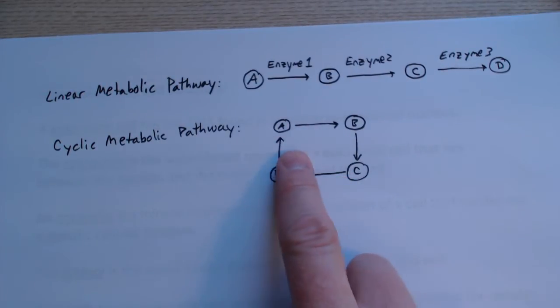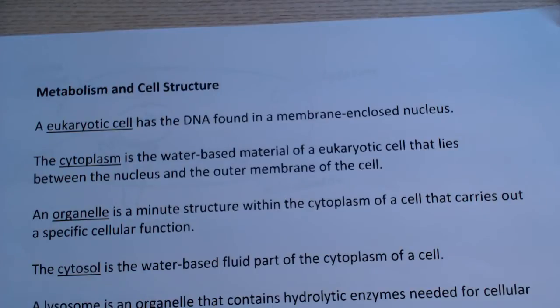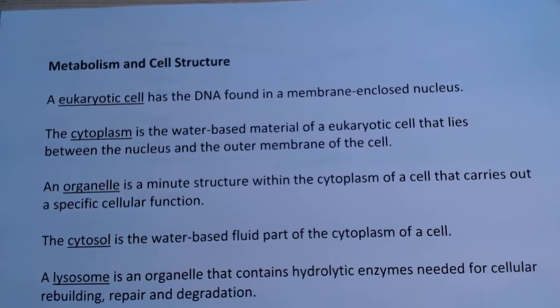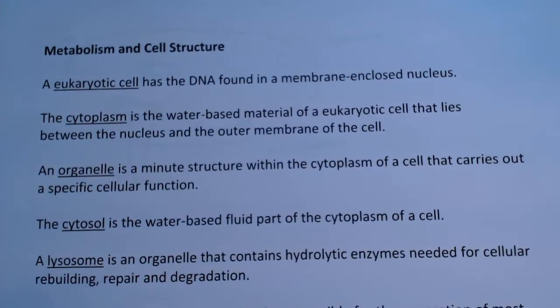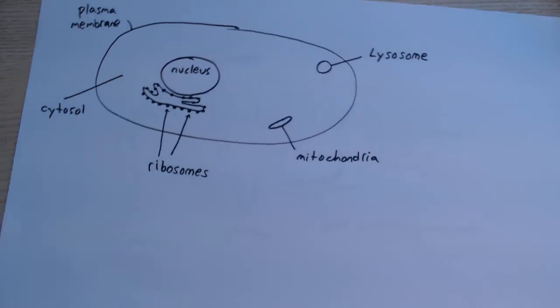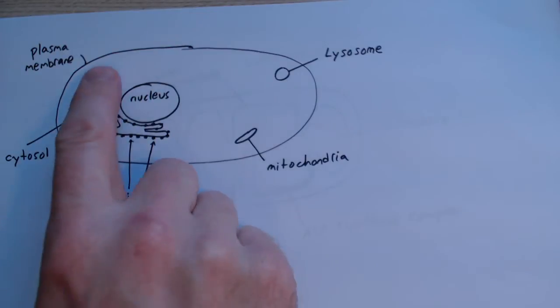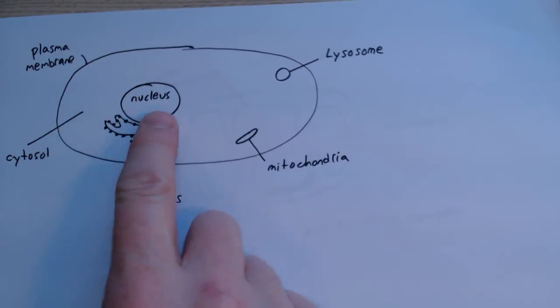Now where does metabolism take place? That's inside the cells. A eukaryotic cell has the DNA found in a membrane-enclosed nucleus. We have shown here a very simplified form. This really simplifies it. We have the plasma membrane and the nucleus and then the interior of the cell between those two boundaries.